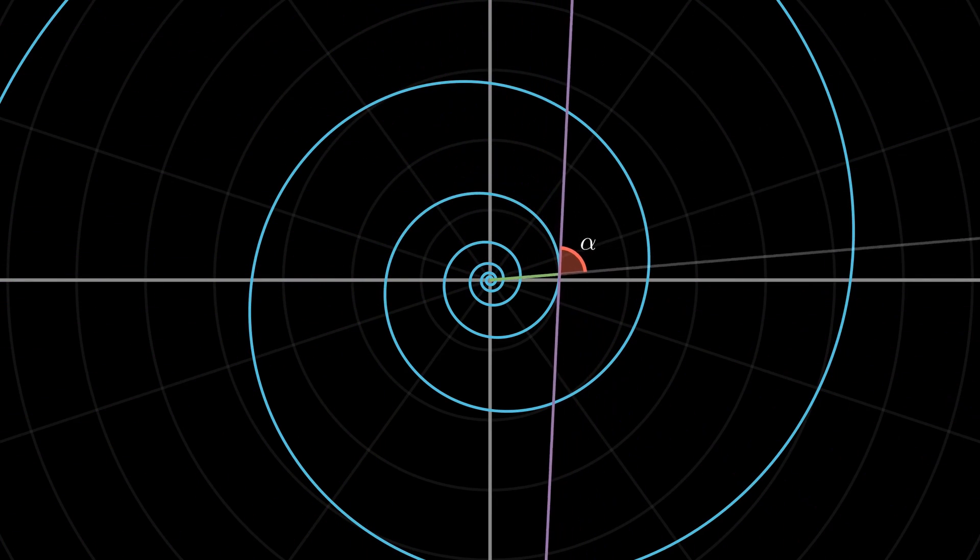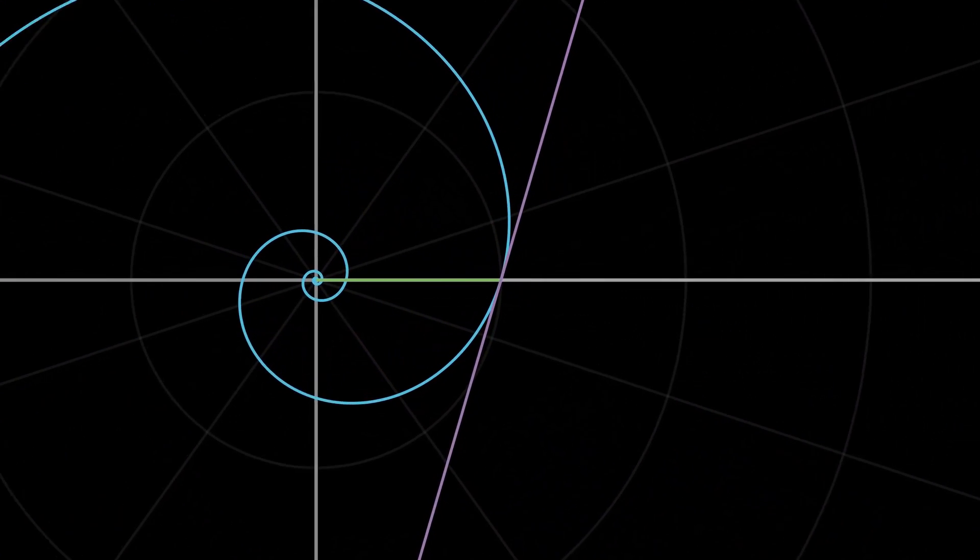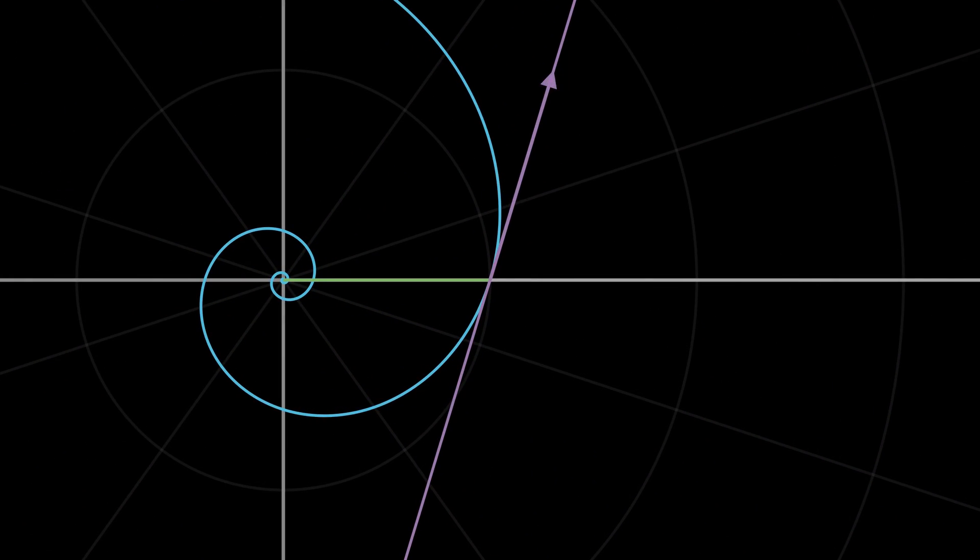To see why this is true, it is obvious that a point moving along the curve at any given instant will be moving along the tangent instantaneously. This tangential velocity has two components: the velocity along the radial line, which is directly proportional to its distance from the origin by definition.